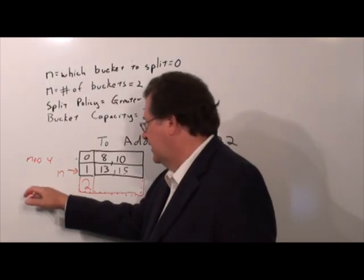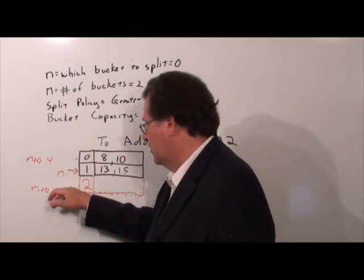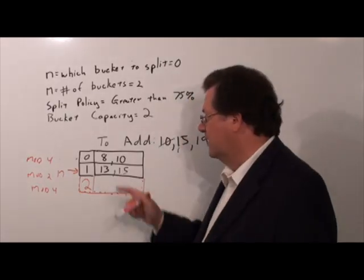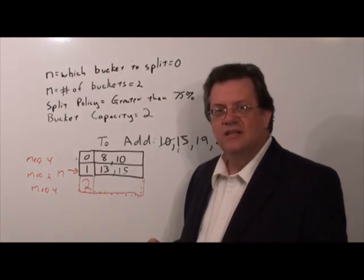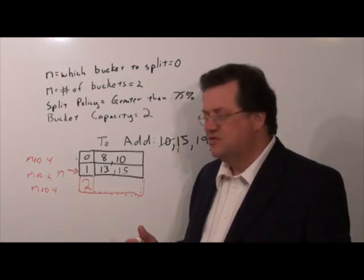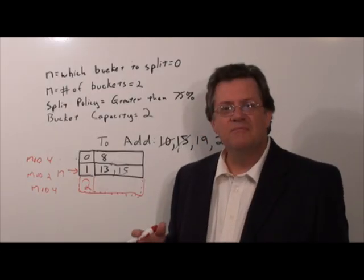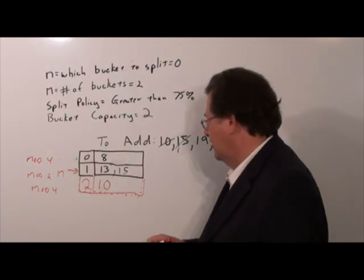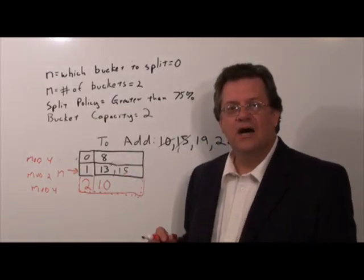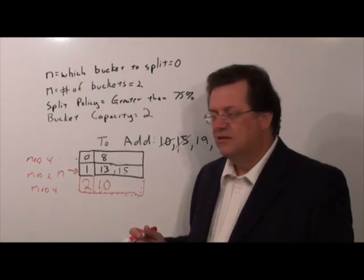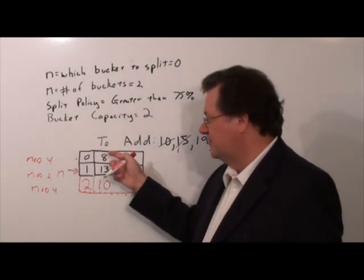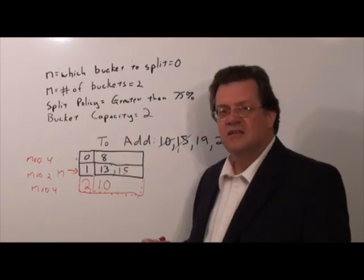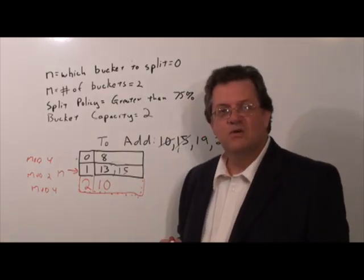This new bucket will also use mod 4, and the old bucket 1 which hasn't changed yet is still mod 2. So 8 mod 4 gives remainder 0 — that stays in bucket 0. Now 10 mod 4 gives remainder 2, so we put the value 10 over in bucket 2. The 13 and the 15 are both mod 1 — they don't change at this point. Bucket 1 will apply mod 4 in the future, bucket 2 applies mod 4, and this new split bucket is using mod 4. So we've just added the 15.